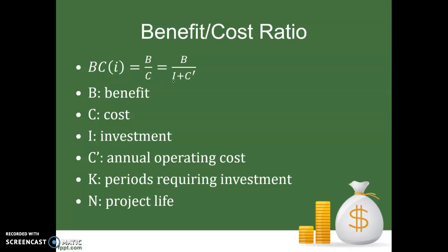With costs, we can break that down. We have C to mean costs in general, but we can specifically look at the investment cost I — the upfront capital we have to spend to get this project up and running. And then we have C-prime, which represents the annual operating cost. We can break costs down into those two components: investment plus annual operating costs equals C, the total cost.